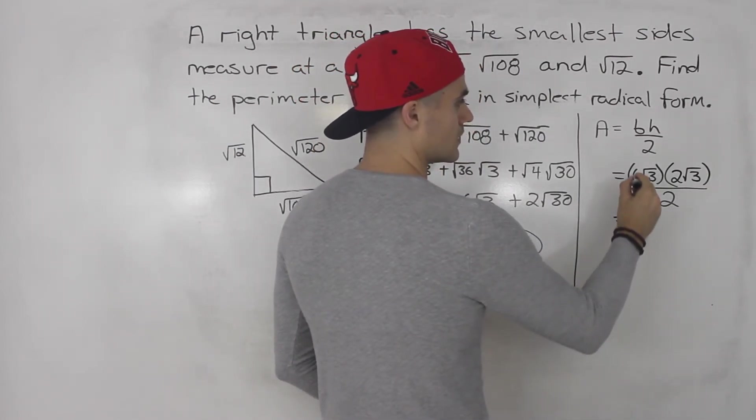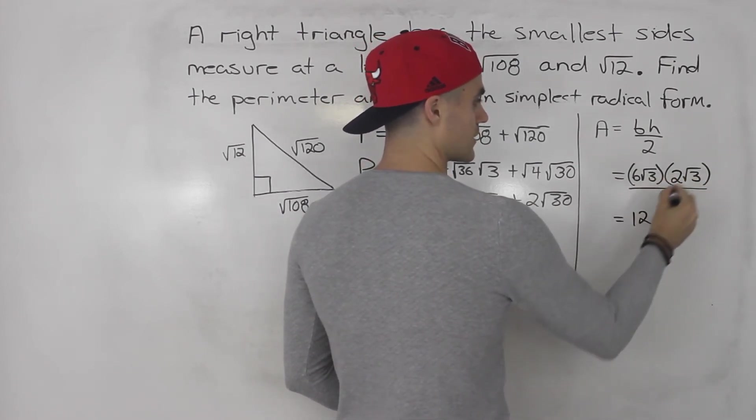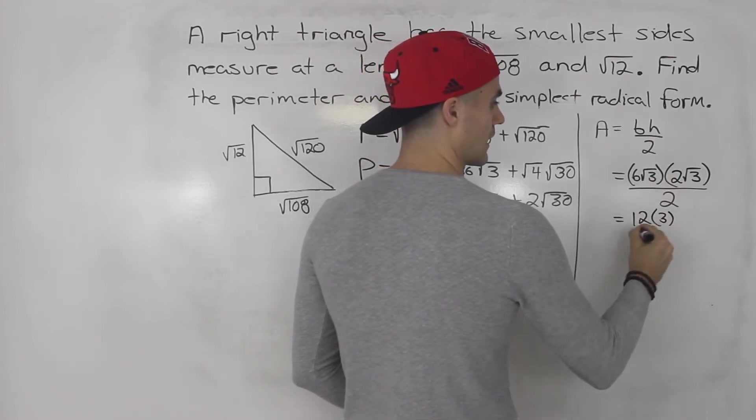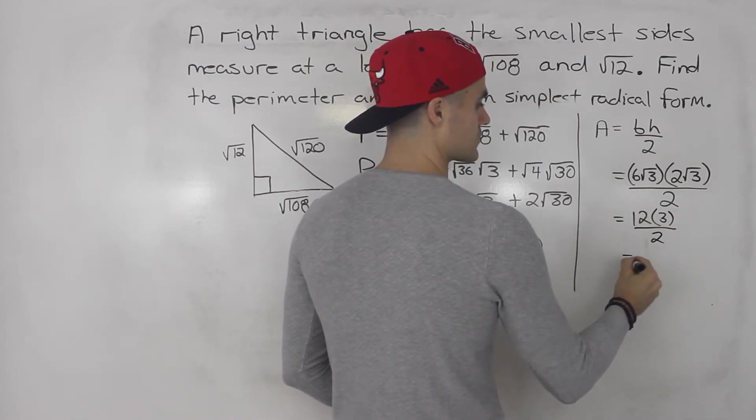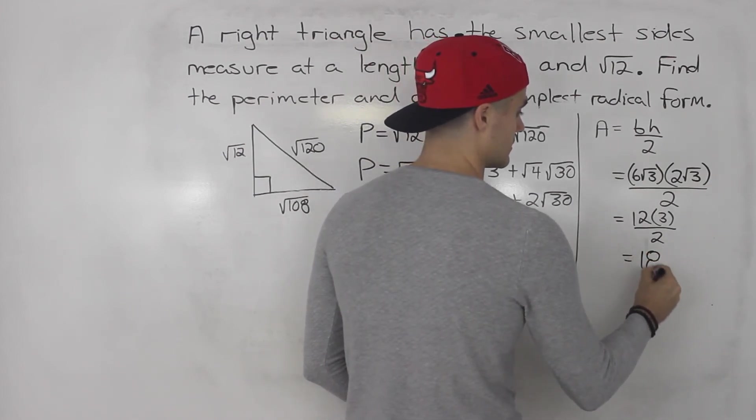And then notice here, 6 times 2 gives us 12. Root 3 times root 3 gives us just 3. And then we're dividing by 2. 12 times 3 is 36. Divided by 2 gives us 18.